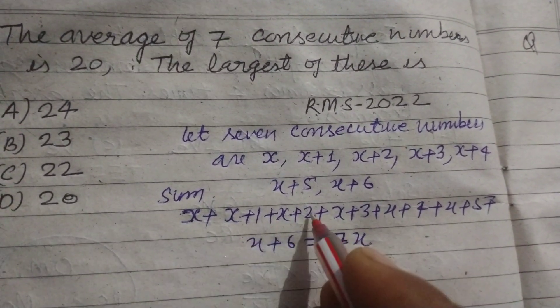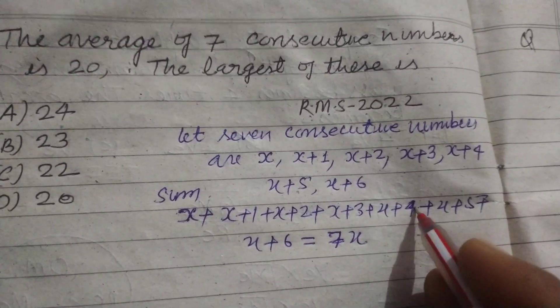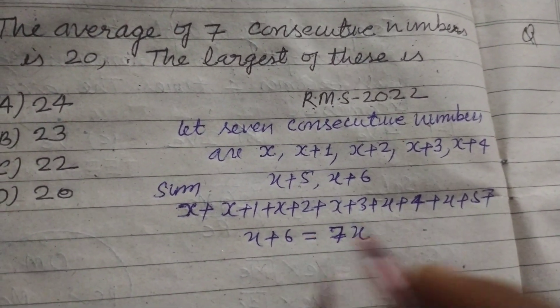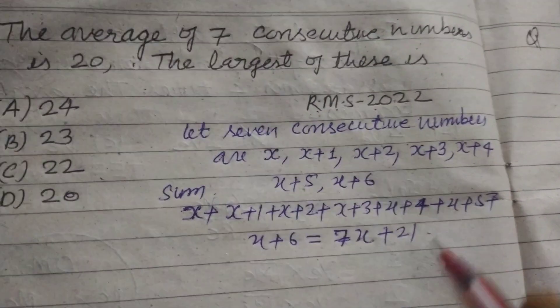plus 1 + 2 + 3 + 4 + 5 + 6, which equals 21. So the sum is 7x + 21.